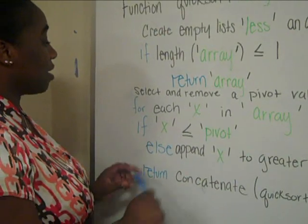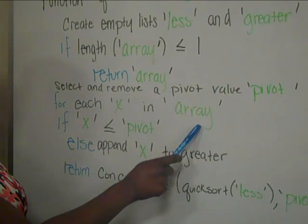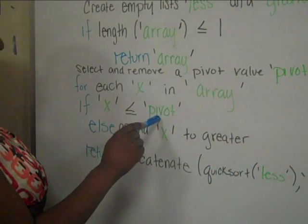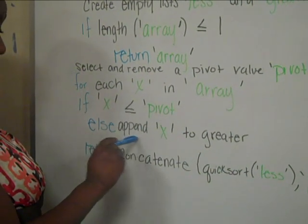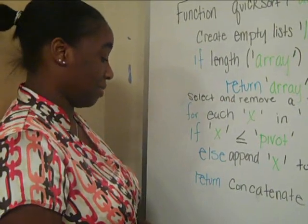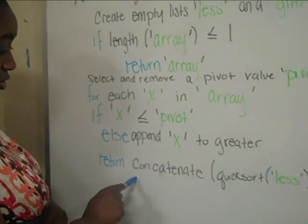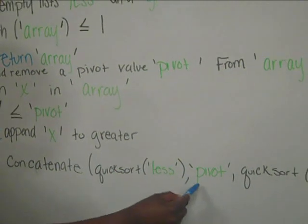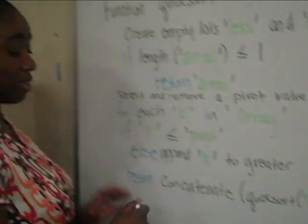Less than meaning it can be 0. Select and remove a pivot value from the array. For every value x in the array, if x is less than or equal to the pivot, it puts it in the less array. If it is greater than, it appends x to the greater array, because x is greater than the pivot. That makes two different arrays. The return statement passes everything to a concatenate method that puts together the less array, which is sorted, the pivot in the middle, and the Quicksort result on the greater array, so they can all be together and sorted.